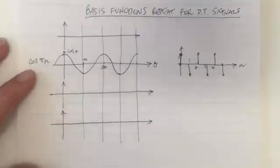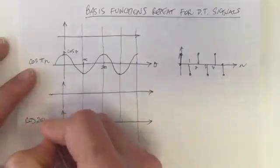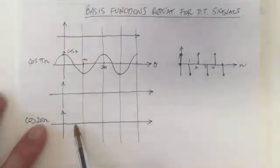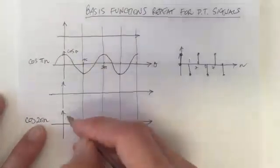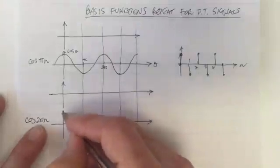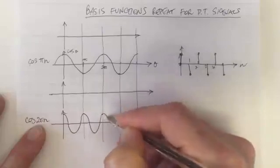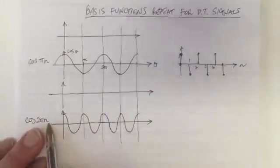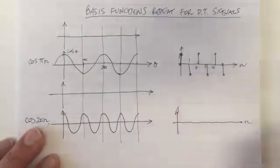What about if we looked at a waveform which was twice that frequency? So cos(2πn) — we've doubled the frequency. This waveform is going to change twice as fast, so everywhere here where there was one period, we're now going to have two periods. Now we're going to plot this and see what cos(2πn) looks like.